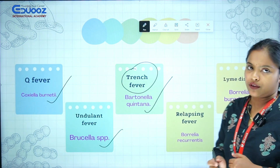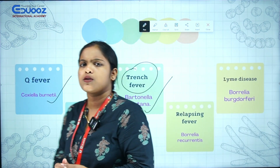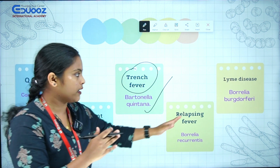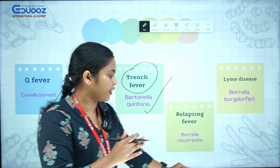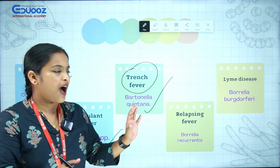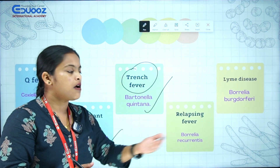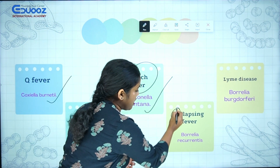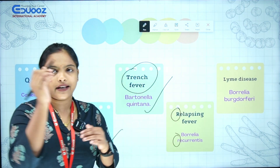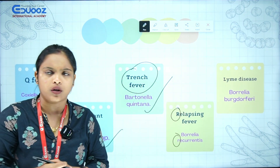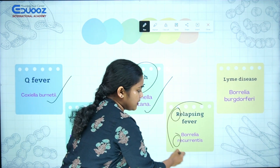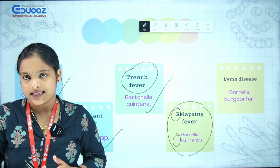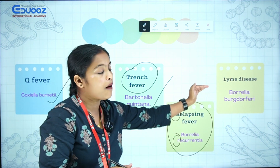Then, Relapsing Fever — that is caused by Borrelia recurrentis. Relapsing fever is associated with Borrelia recurrentis. Then, Lyme Disease — Lyme Disease is caused by Borrelia burgdorferi. That is important.